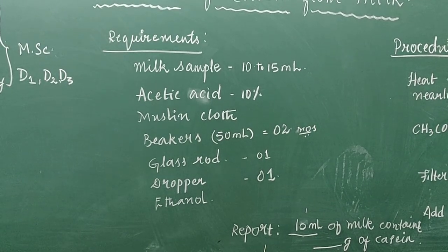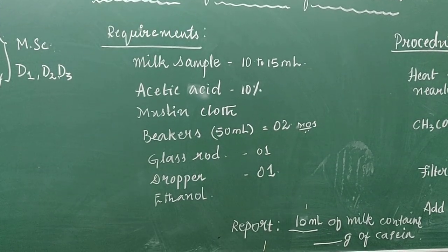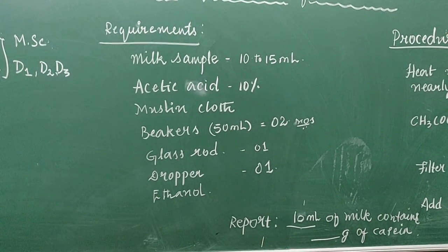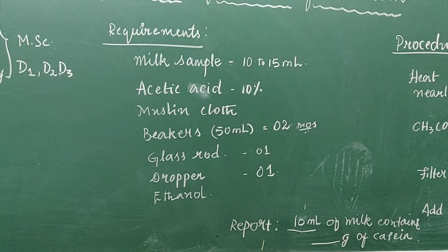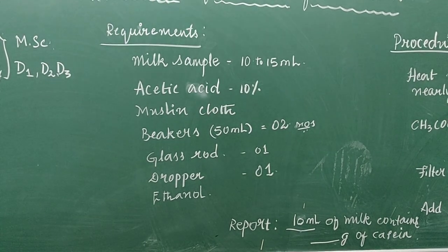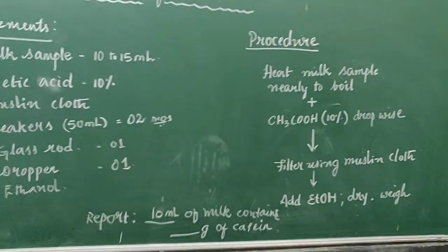And then acetic acid, prepare 10% of acetic acid. Muslin cloth, you need 50 ml beakers, 2 beakers, 1 glass rod, 1 dropper and ethanol. A very simple experiment.